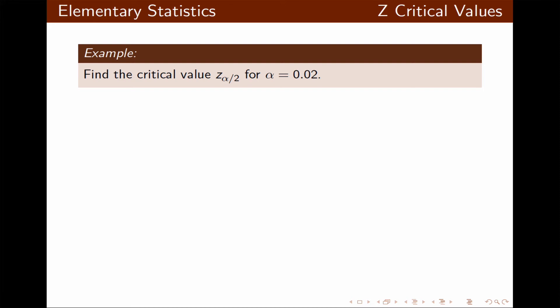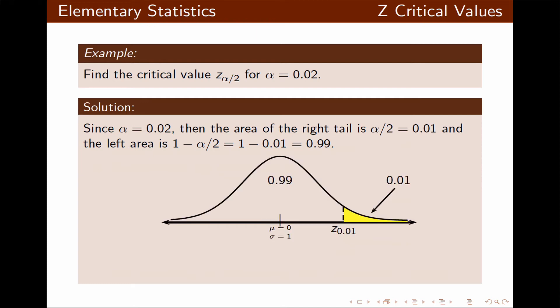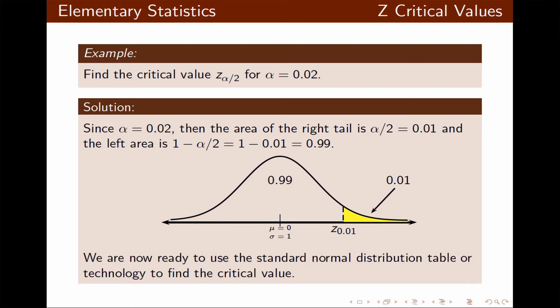In this example, we are asked to find the critical value z alpha over 2 for alpha equal to 0.02. Since alpha is 0.02, the area of the right tail is alpha over 2, which is 0.01, and the left area is 1 minus alpha over 2, which is 0.99. We will use the standard normal distribution table or technology to find this critical value.